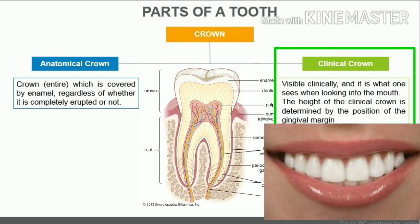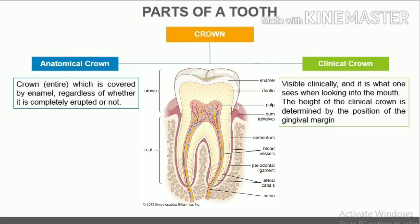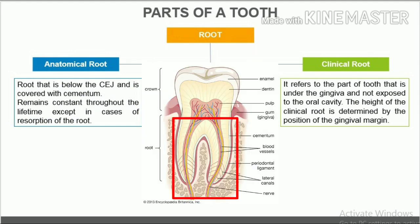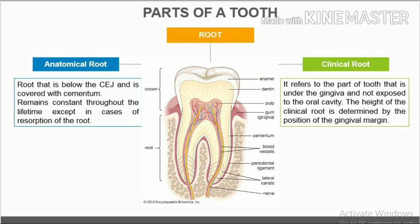The clinical crown refers to the crown which is visible clinically — what one sees when looking into the mouth. The height of the clinical crown is determined by the position of the gingival margin. The root is the portion of the tooth covered by cementum. The tooth may have either a single root or multiple roots.